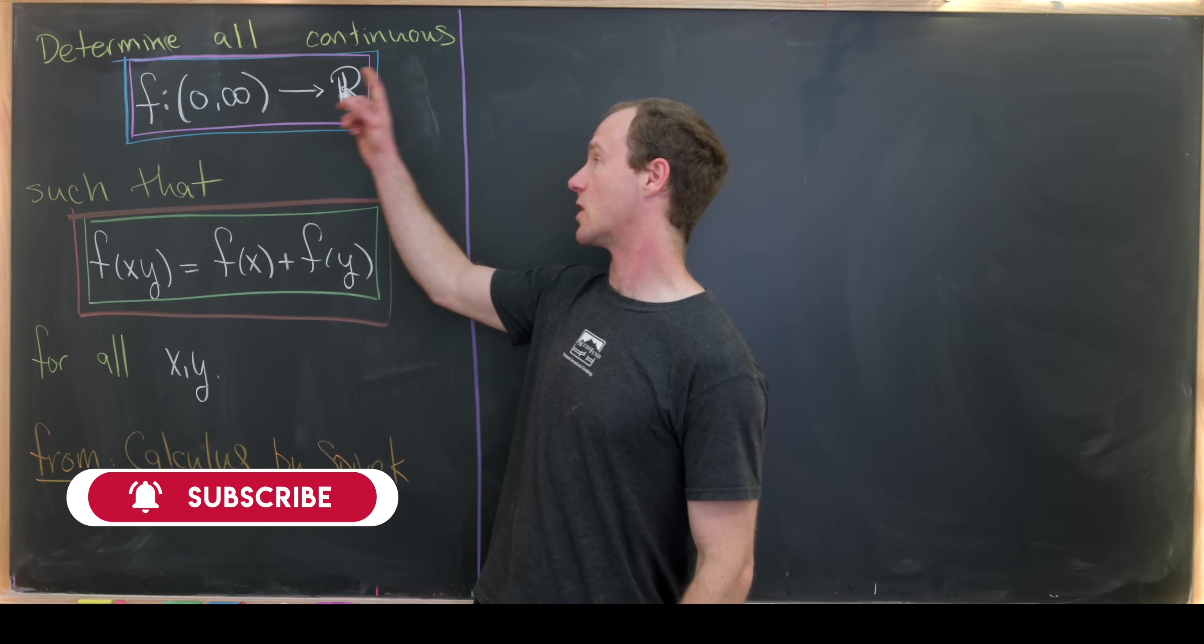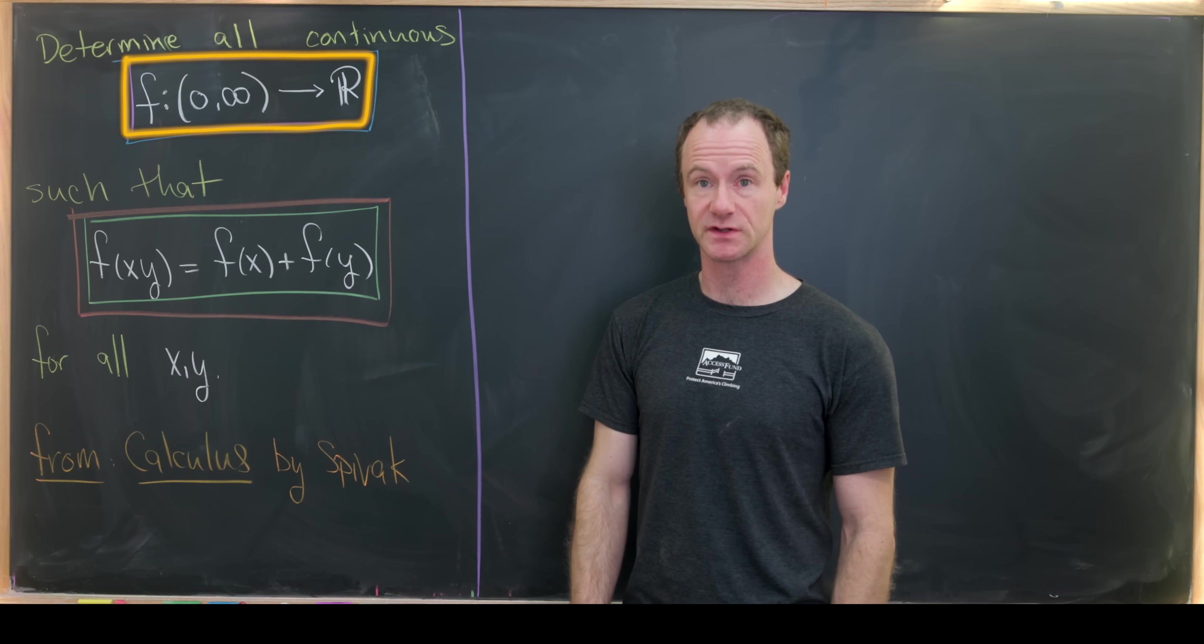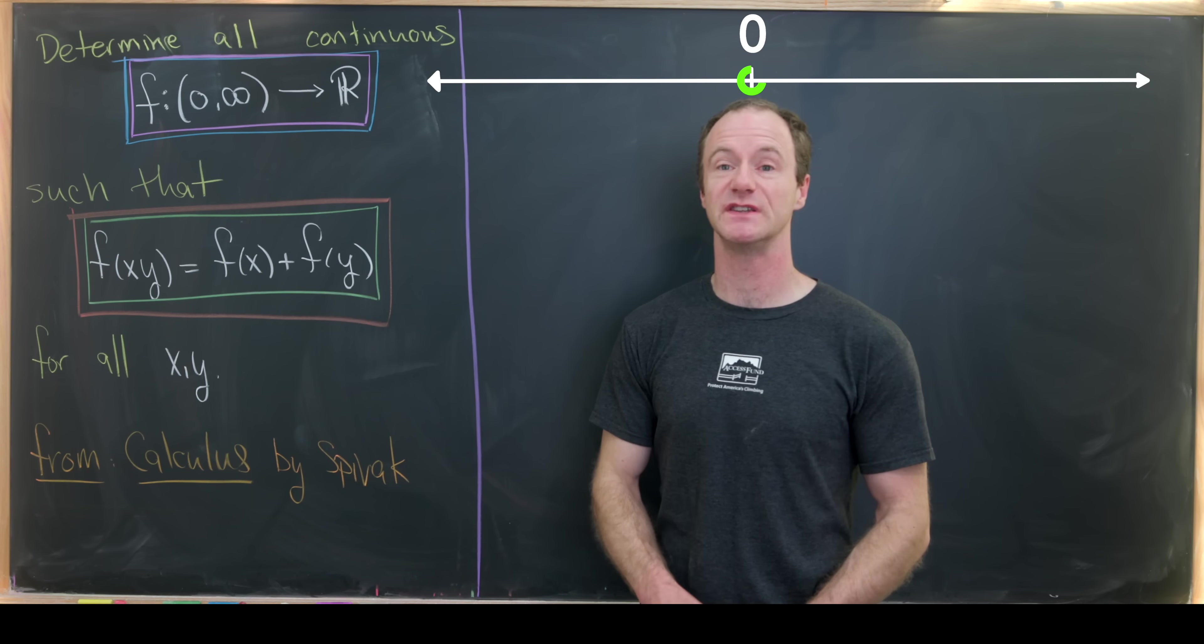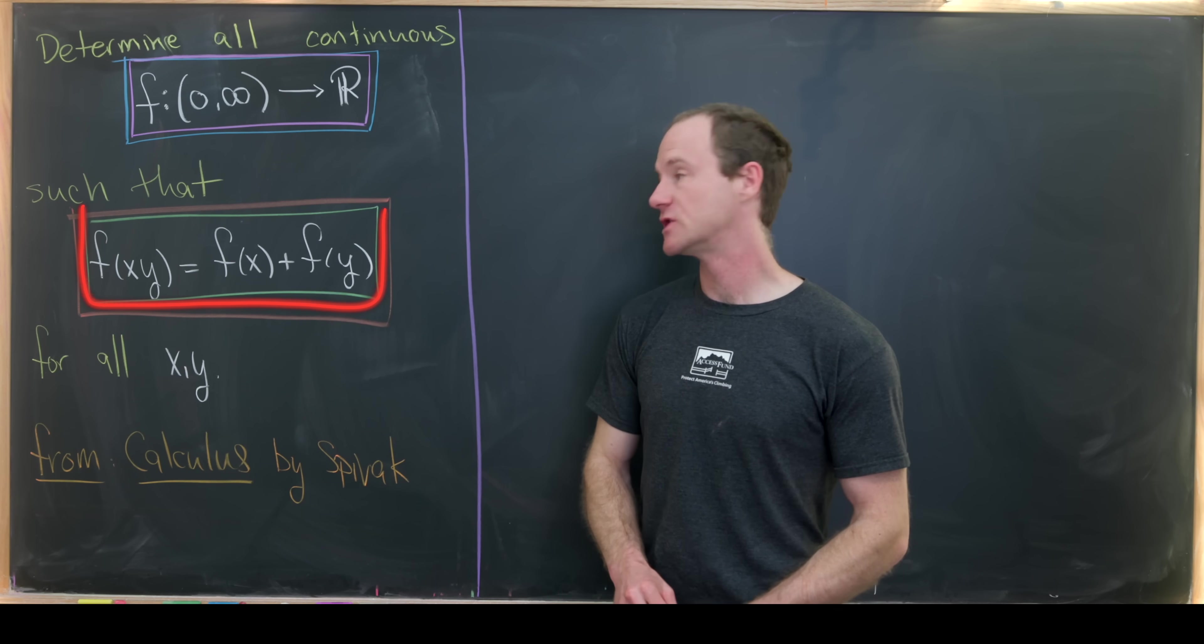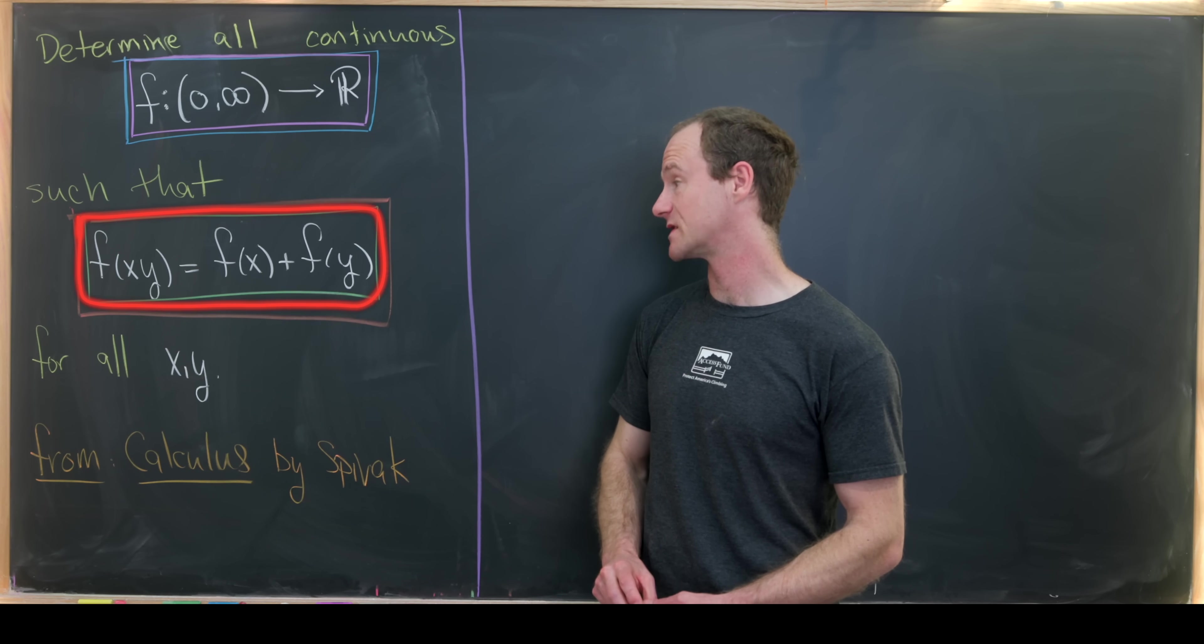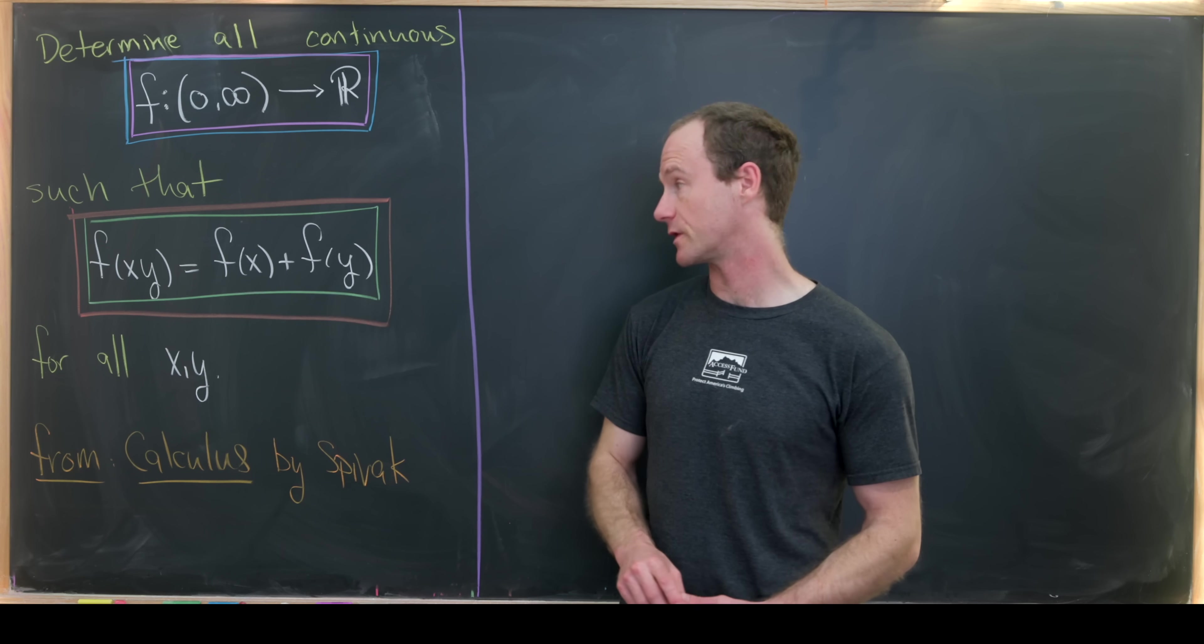Our goal is to determine all continuous functions going from the positive real numbers to the real numbers. I've denoted the positive real numbers by this interval from zero to infinity. And these functions must satisfy the following equation. We have f(xy) equals f(x) plus f(y) for all x, y. Of course these x, y must come from the positive real numbers.